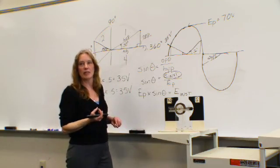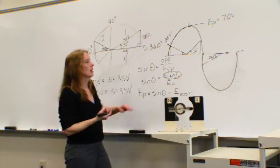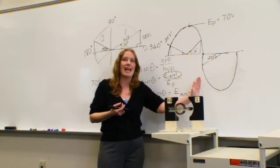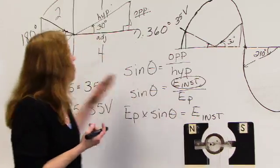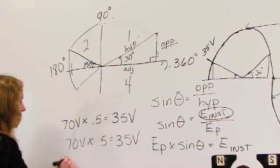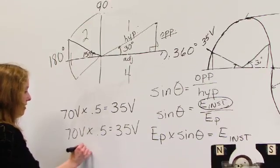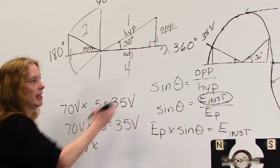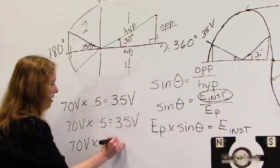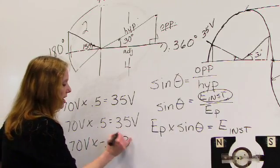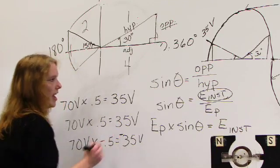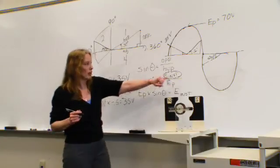When we get to that 210 degree mark, once again, we would have an instantaneous voltage, but because we are on the negative portion of our sine wave, or on the negative portion of that rotation, we would then have our E peak, once again, times the sine now of 210 degrees, which would be a negative 0.5, thereby giving us a negative 35 volts difference at that particular point within our sine wave.